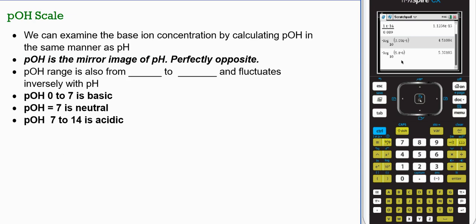pOH scale. We can examine the base ion concentration by calculating pOH in the same exact manner as pH. It's the mirror image. It's perfectly opposite of pH. The range is just like pH is 0 to 14.